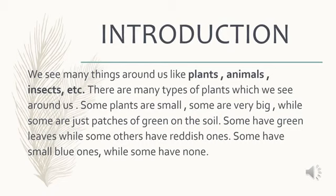We see many things around us like plants, animals, insects, etc. There are many types of plants which we see around us. Some plants are small, some are very big, while some are just patches of green on the soil. Some have green leaves, while some others have reddish ones. Some have small blue ones, while some have none.